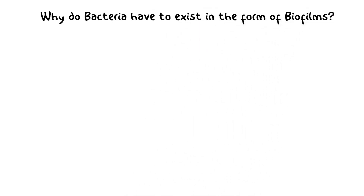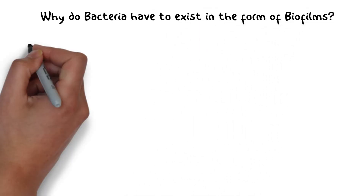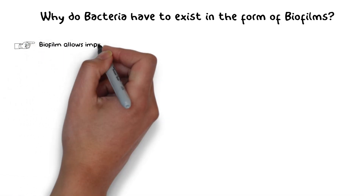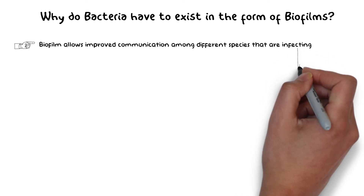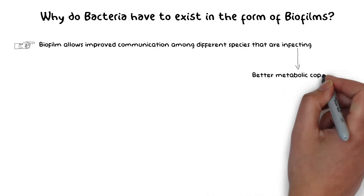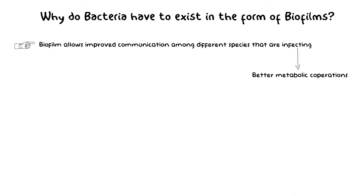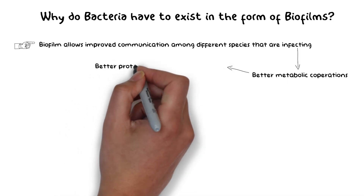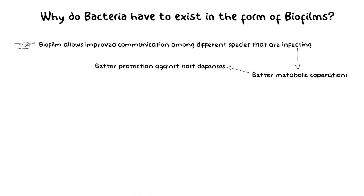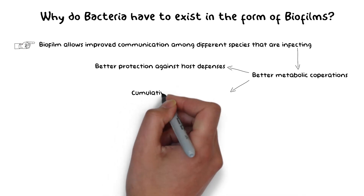Why do bacteria form biofilms rather than existing as individual entities? Because biofilms allow bacteria to have improved communication among different species infecting together, allowing for better metabolic cooperation and protection against exogenous threats. Usually there is not a single species of bacteria infecting a host but a combination, though a single species may dominate. Biofilms allow better communication and interaction between these species, resulting in better protection against host defenses and a cumulative additive pathogenetic effect on the host.